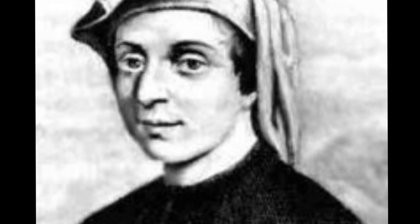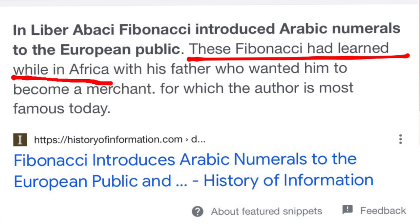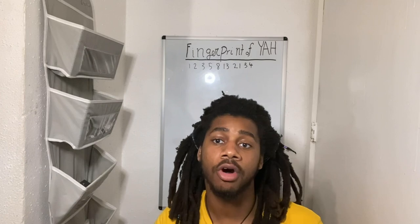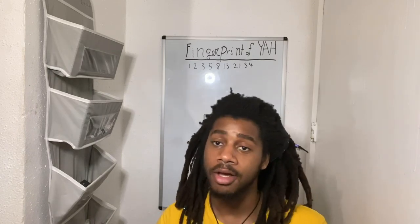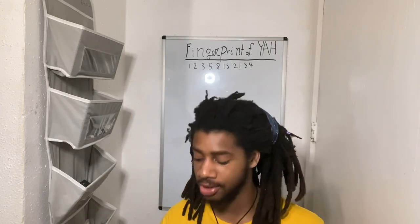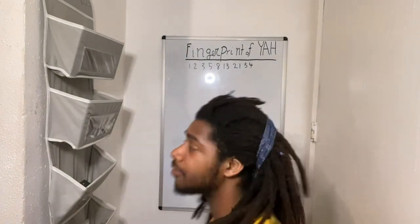There was a man named Fibonacci, and they say he invented the Fibonacci sequence, but no — he actually learned it from Black Arabs who were our brothers, and they learned it from their ancestors who learned it from Abraham, who was also our father. Abraham was a master mathematician. He knew all about math because Yah himself was so near to Abraham that Yah revealed all kinds of things to Abraham beyond our imagination.